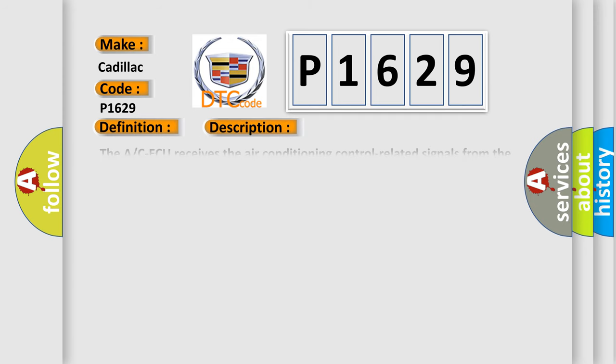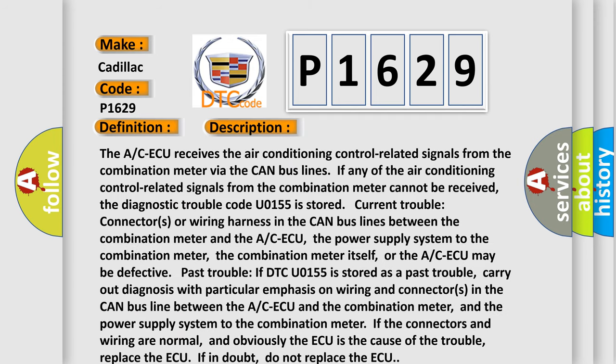And now this is a short description of this DTC code. The A/C-ECU receives the air conditioning control related signals from the combination meter via the CAN bus lines. If any of the air conditioning control related signals from the combination meter cannot be received, the diagnostic trouble code U0155 is stored.